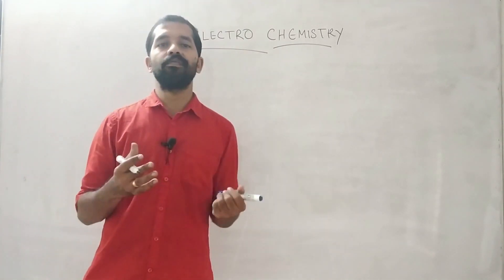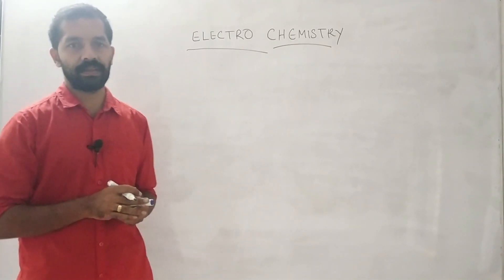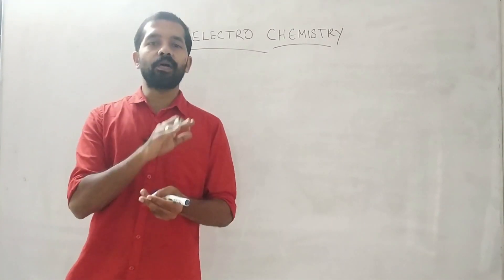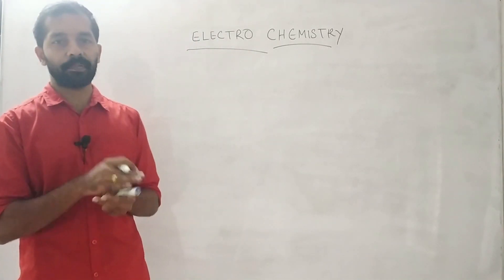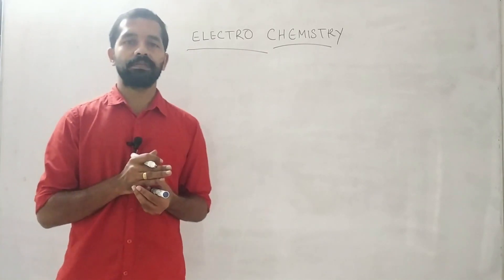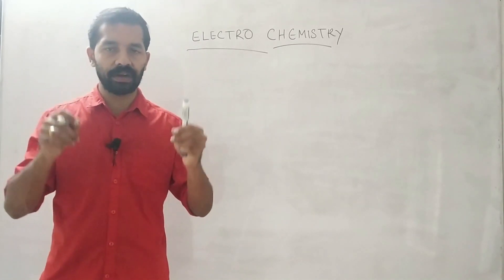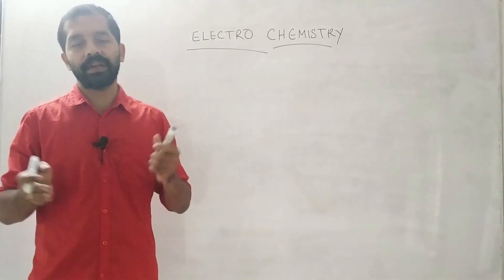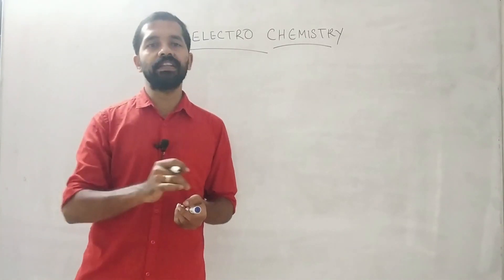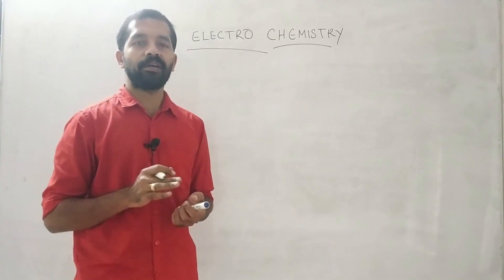If we use an electrochemical cell, chemical energy is converted into electrical energy. This is how we use electrochemistry.